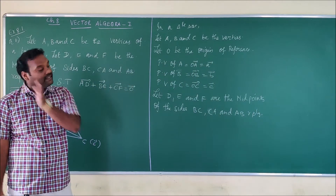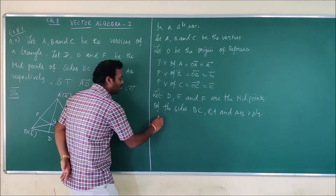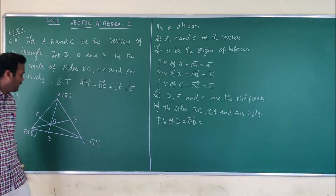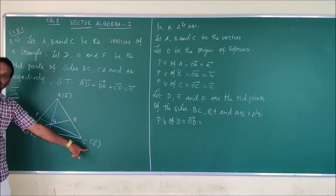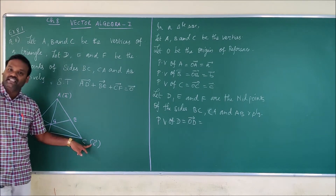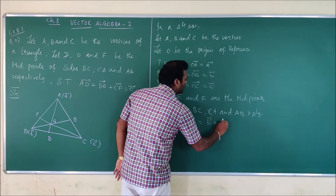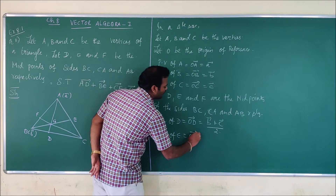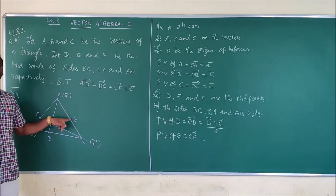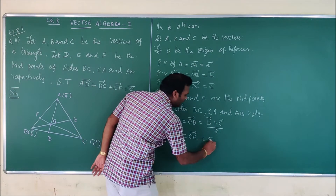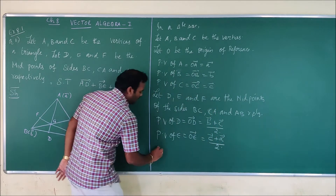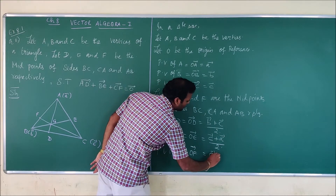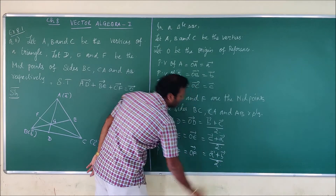Since D, E and F are midpoints, I am going to write the position vector of each. The position vector of D equals OD vector. Since D is the midpoint of BC, OD = (vector b + vector c) / 2. The position vector of E equals OE vector. Since E is the midpoint of CA, OE = (vector c + vector a) / 2. The position vector of F equals OF vector = (vector a + vector b) / 2.